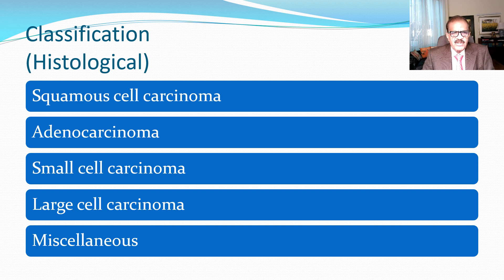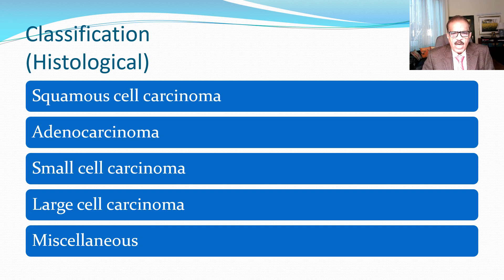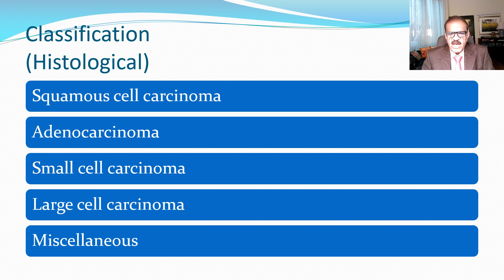We can classify lung cancer from a histological point of view and from treatment and prognosis points of view. If you take a biopsy — from sputum, bronchoscope, or transcutaneous tissue — you can classify lung cancer according to histological changes. Squamous cell carcinoma and adenocarcinoma are both relatively common, approximately 40% each. Squamous cell carcinoma arises from the squamous cells of the main airway endothelium and tends to be more central, whereas adenocarcinoma arises from the glands of the bronchial tree and is more peripheral. You cannot differentiate between the two without biopsy.